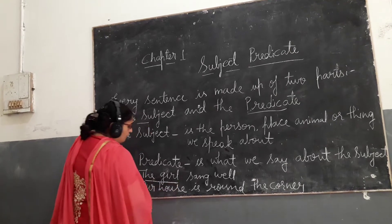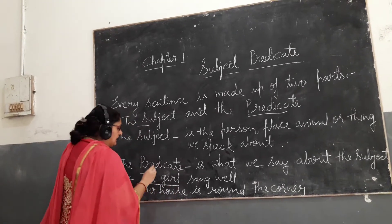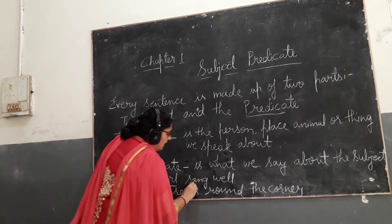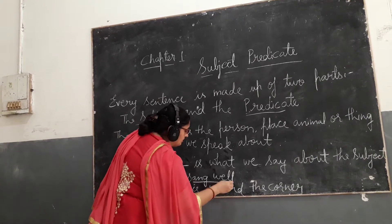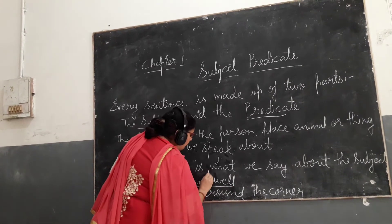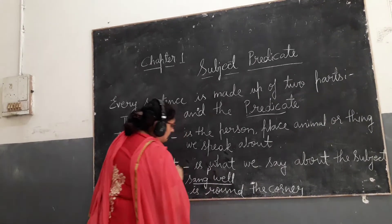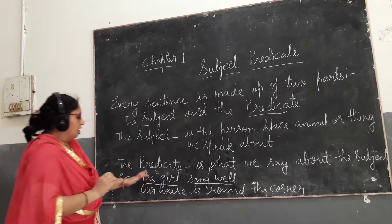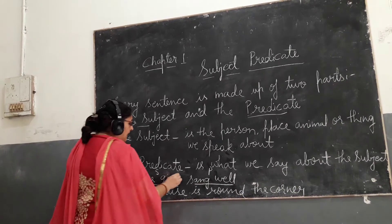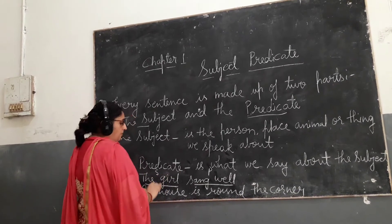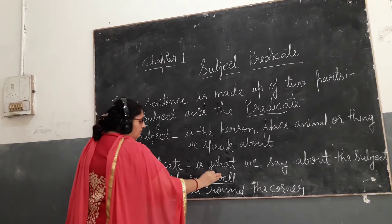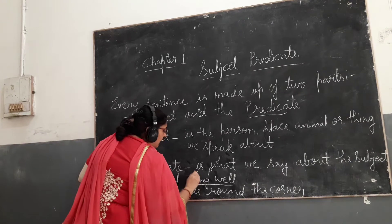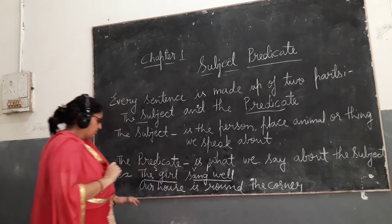For example, you can say 'The girl' is the subject, and the rest of the words — 'dances well' — is the predicate.